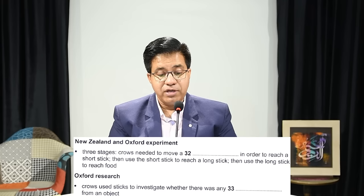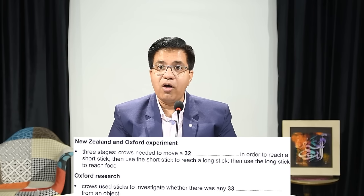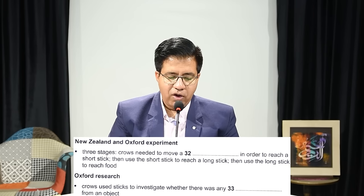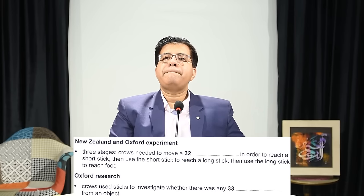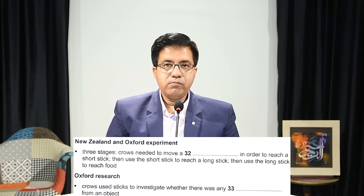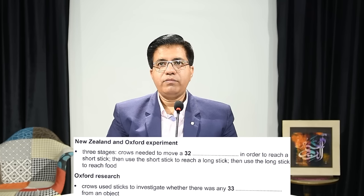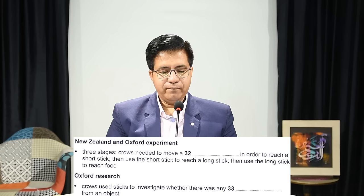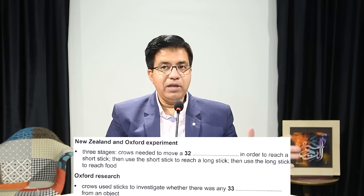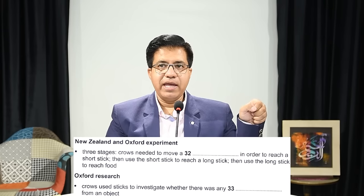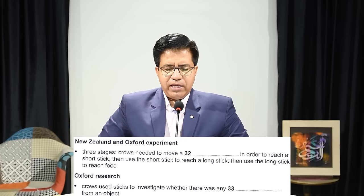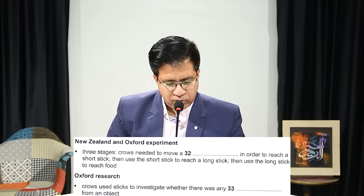The answer is 'string' — crows needed to pull up a string to reach the short stick. S-T-R-I-N-G, like a rope. The short stick is already written in the question so it cannot be the answer. Then they use the short stick to get the long stick, and the long stick to reach the food.